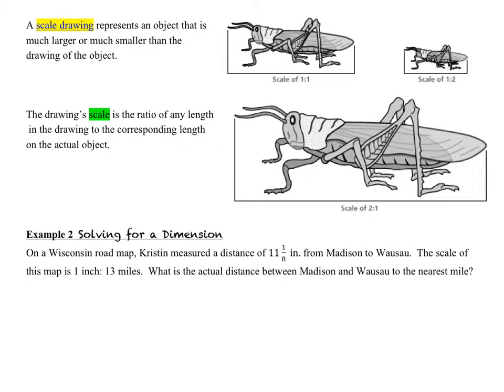A scale drawing represents an object that is much larger or much smaller than the drawing itself. The drawing scale is the ratio of any length in the drawing to the corresponding length on the actual object — proportional dimensions with the same similarity ratio in both length, width, or height.